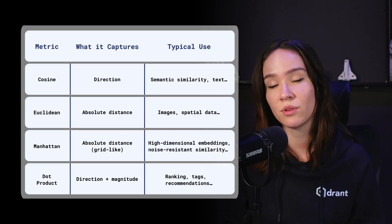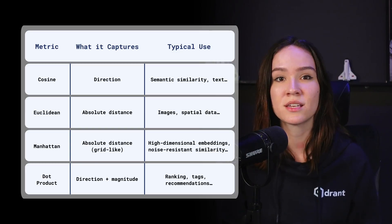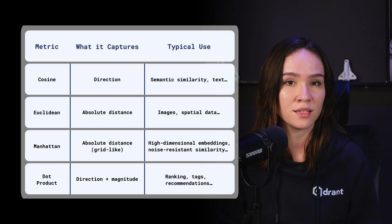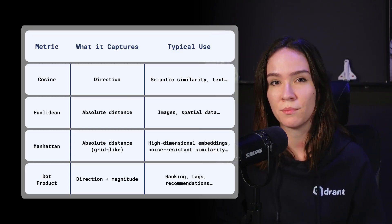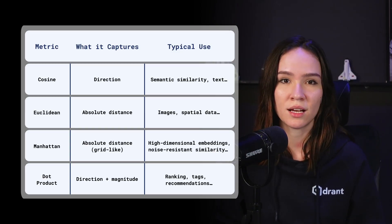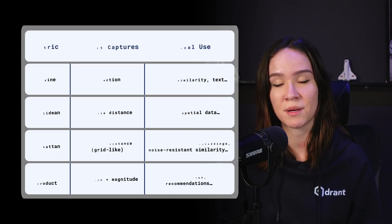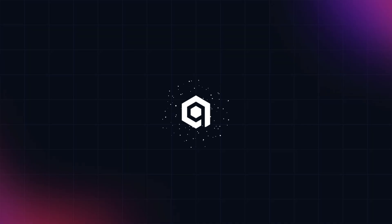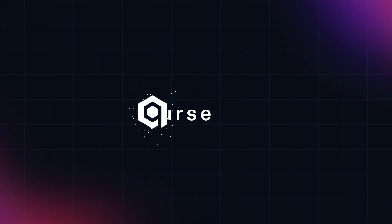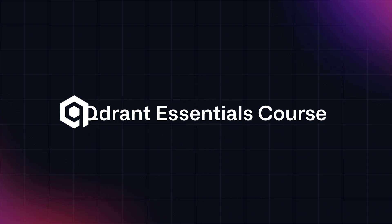As a rule of thumb, cosine similarity is a good choice if you're working with most text embeddings, especially if you're looking for semantic similarity. We'll see you next time. Thank you.